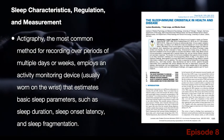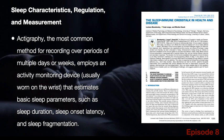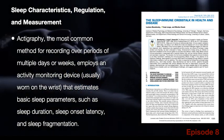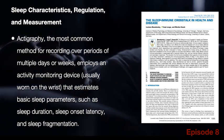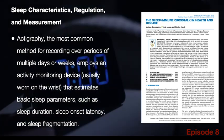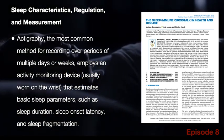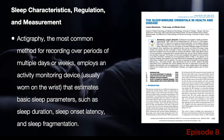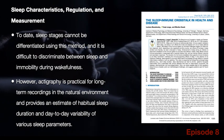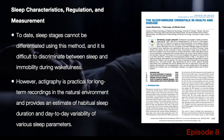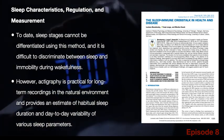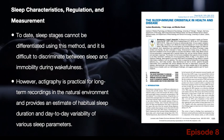Actigraphy, the most common method for recording over periods of multiple days or weeks, employs an activity monitoring device, usually worn on the wrist, that estimates basic sleep parameters such as sleep duration, sleep onset latency, and sleep fragmentation. To date, sleep stages cannot be differentiated using this method, and it is difficult to discriminate between sleep and immobility during wakefulness.